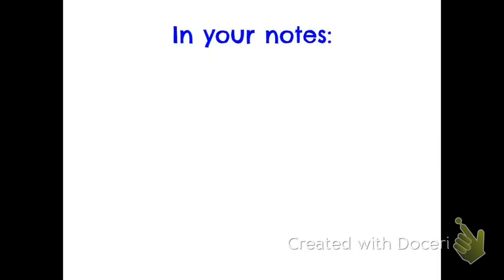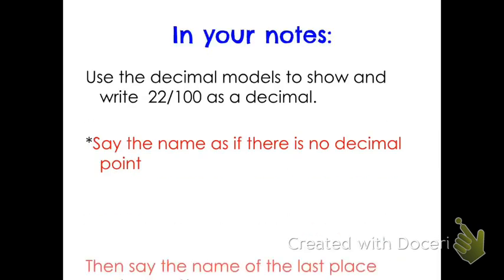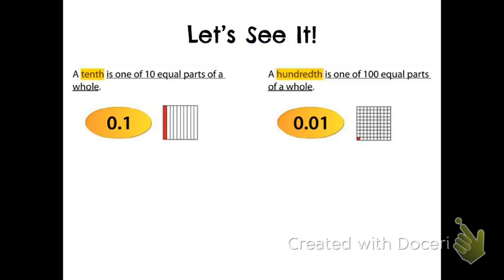We're going to talk a little bit more, and in your notes I want to include what decimal place value looks like. So go ahead and write down both of these. A tenth is one of the ten equal parts of a whole—this needs to be written down in your notes. And a hundredth is one of a hundred equal parts of a whole. Again, both of these need to be written down in your notes.